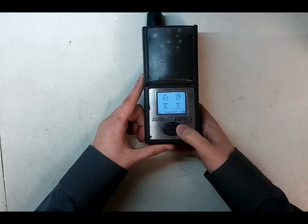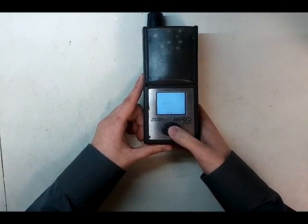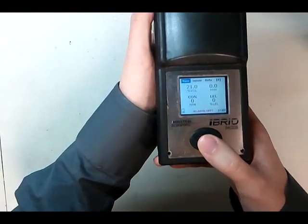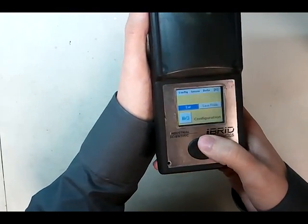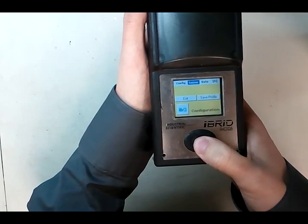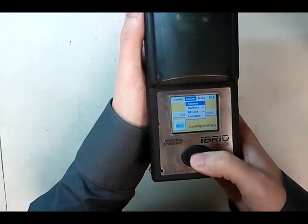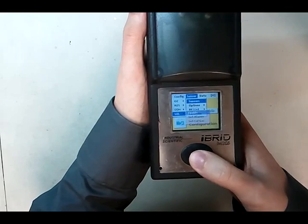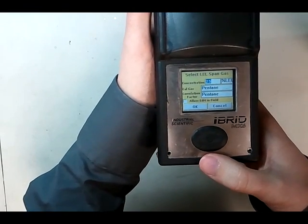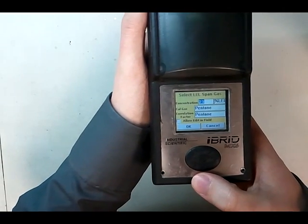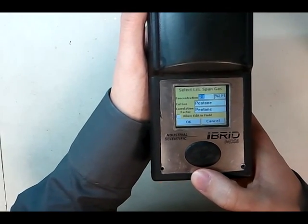First we're going to set up the monitor. It's currently set to be calibrated using pentane. I'll show you how we do that. Go to View, Configure, Sensor, Sensors list, down to LEL and Set Calgas. Right now you can see it's set to 25% LEL pentane, recommended by Industrial Scientific currently.